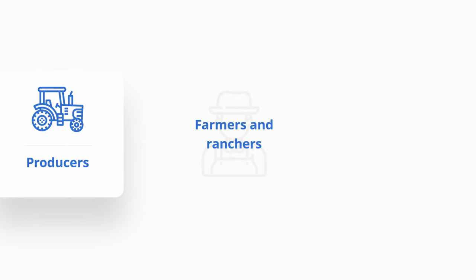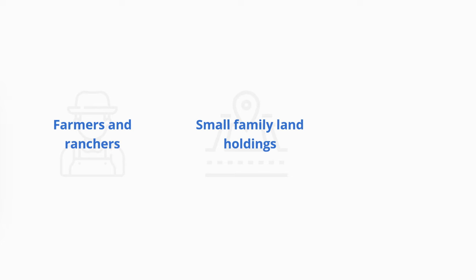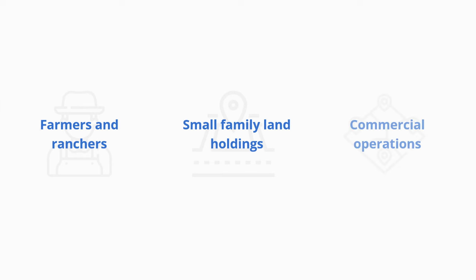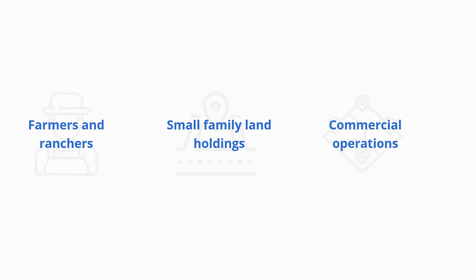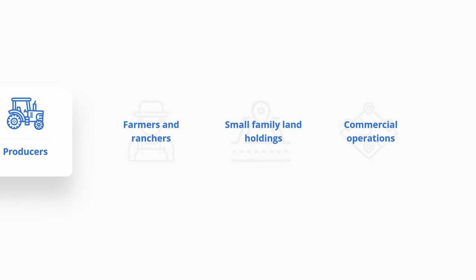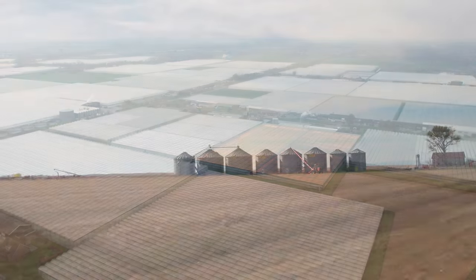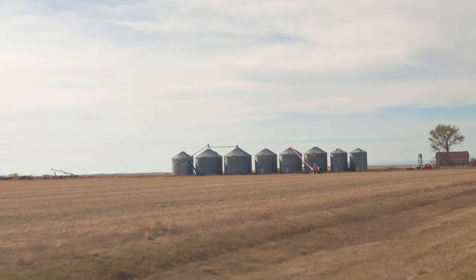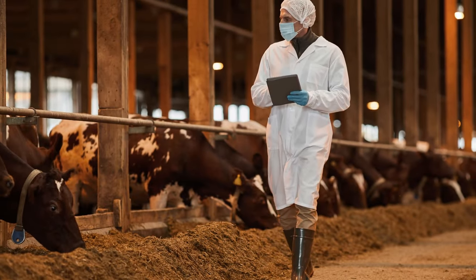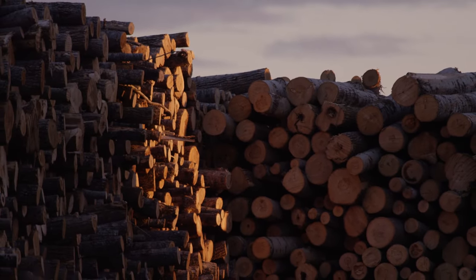Producers are farmers and ranchers. They range from small family land holdings to large and intensive commercial operations that take place on both raw and cultivated land, or even within buildings like greenhouses. You're likely familiar with crop and animal production systems, but aquatic and forestry production also plays an important role in some regions.